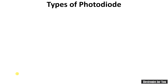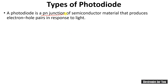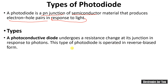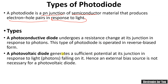A photodiode is a p-n junction of semiconductor material that produces electron-hole pairs in response to light. As it is a light-sensitive device, it produces electron-hole pairs in response to light. The two types of photodiodes are: a photoconductive diode, which changes its resistance whenever light falls on it and is generally operated in reverse bias mode, and a photovoltaic diode, also known as a solar cell, which produces electric voltage when light falls on it.